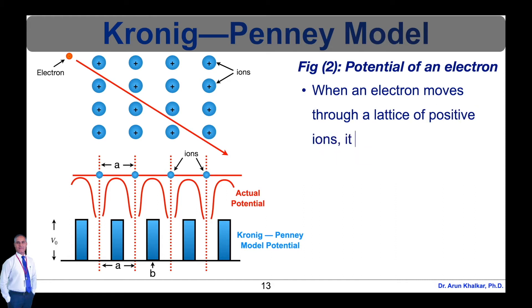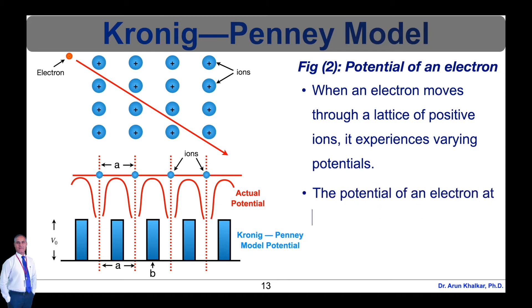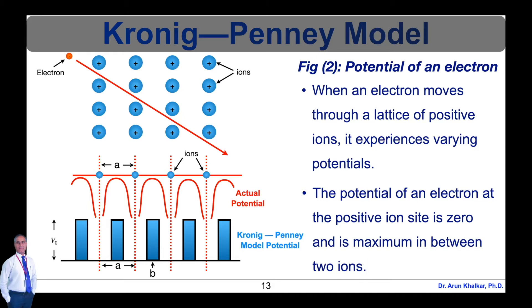The Kronig-Penney model describes when an electron moves through a lattice of positive ions, it experiences varying potentials. The potential of an electron at the positive ion site is zero and it is maximum in between two ions, as shown in this diagram. Kronig and Penney suggested a simplified model where atoms are represented as a one-dimensional infinite row of rectangular potential wells, separated by barriers of width b. Each well has width a and depth V0. The inter-atomic spacing is represented as a, and the period of potential is a plus b, as clearly shown in this diagram.